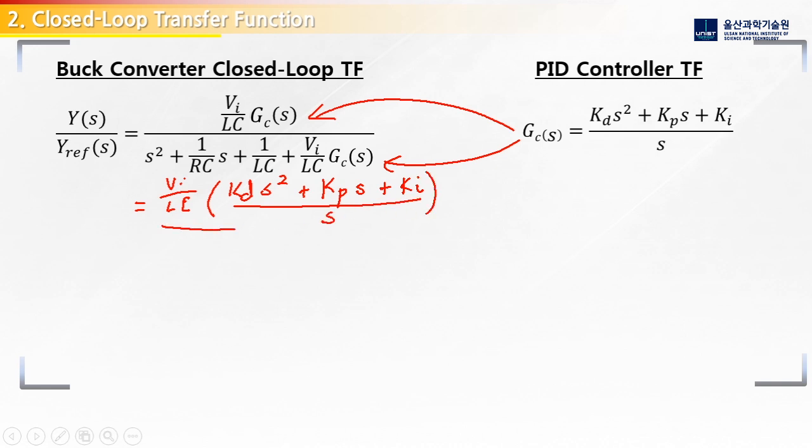And then we do the same to the denominator. S squared plus 1 over RC times s, 1 over LC plus Vi over LC.